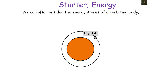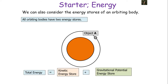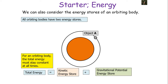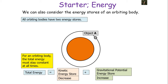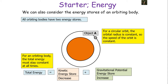We can also consider the energy stores of an orbiting body. All orbiting bodies have two energy stores: a kinetic energy store due to movement, and a gravitational potential energy store due to position in the gravitational field — these add up to give total energy. For an orbiting body, total energy must stay constant at all times. If the kinetic energy store increases, the gravitational potential energy store must decrease — so when the orbital radius decreases, the body speeds up. Conversely, when the orbital radius increases, the body slows down. For a circular orbit, the orbital radius is constant, so there's no change in either energy store and the speed is constant.